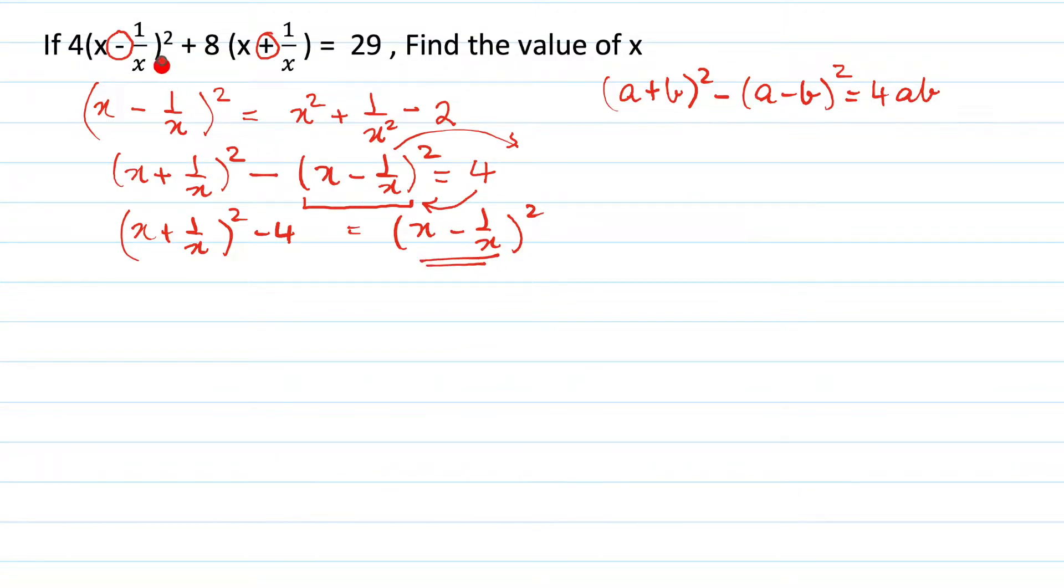Now this is here. So we are going to rewrite the equation which is given as 4 and in place of this we will write (x + 1/x)² - 4. Did we get that? This is here and this is this value. Then plus 8(x + 1/x) and that is equal to 29.